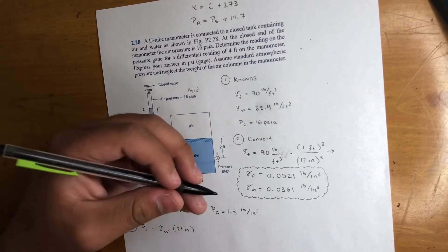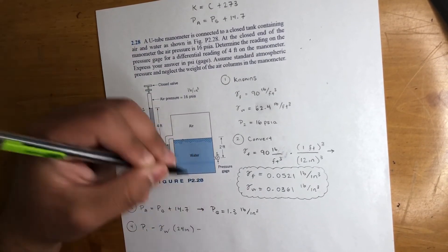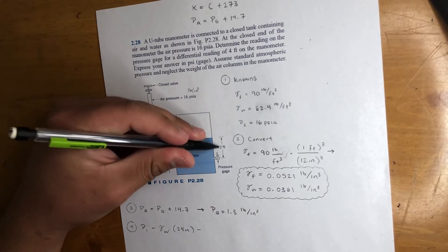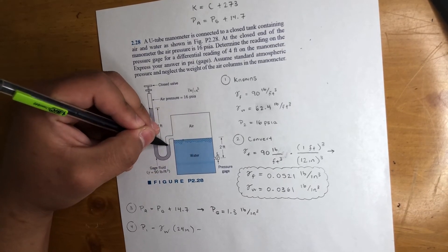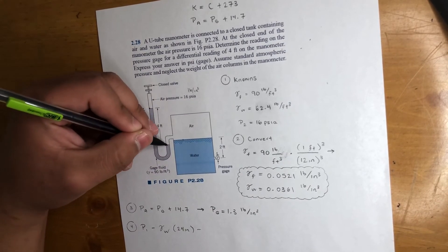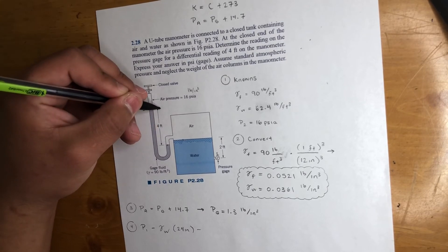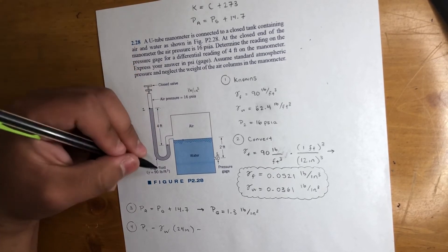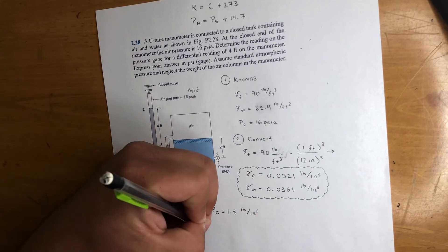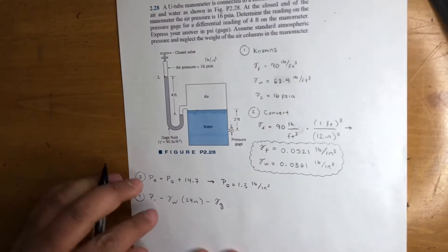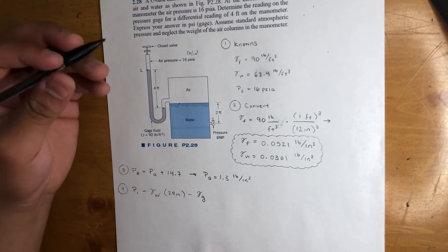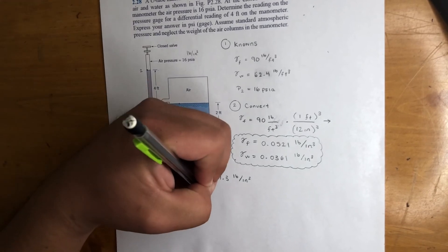Now we subtract because now we're here, right? We came up two feet, move this way, because all this is negligible. Now the distance from here to here is four feet—48 inches—and it's a gauge fluid. So let's do gamma of gauge fluid times 48 inches.